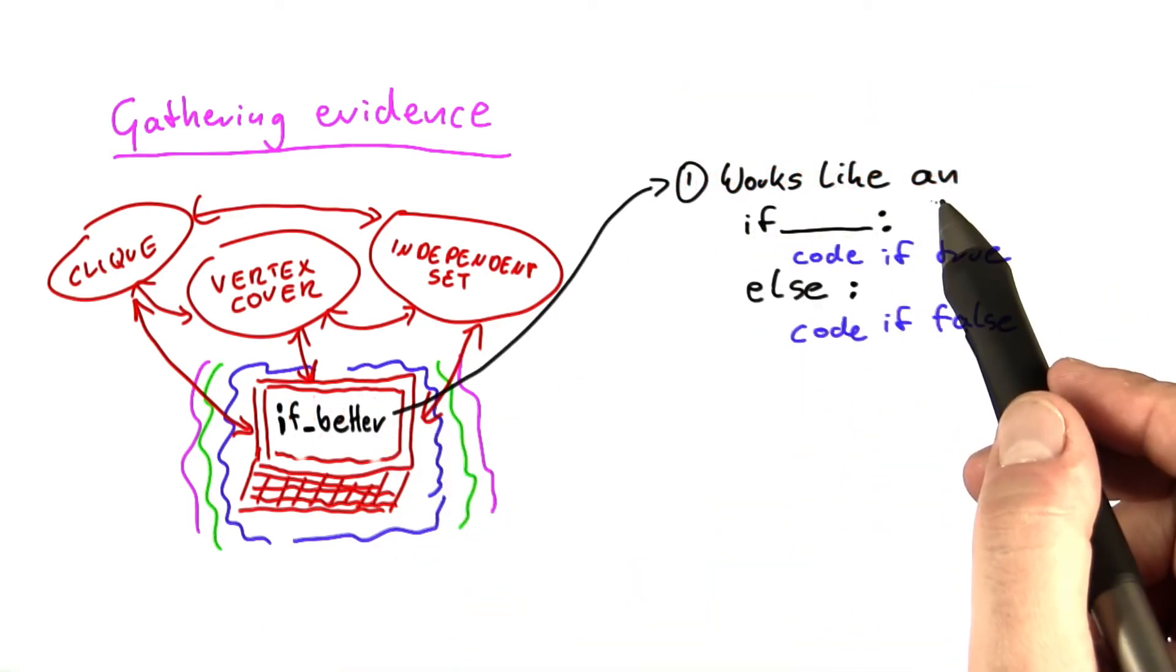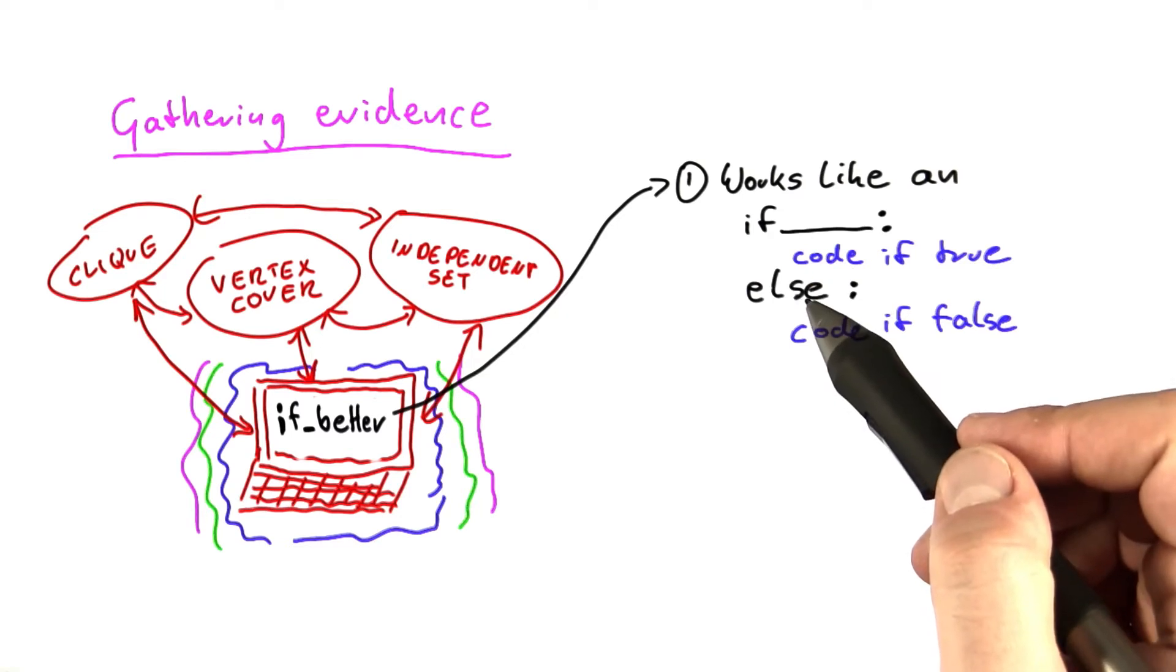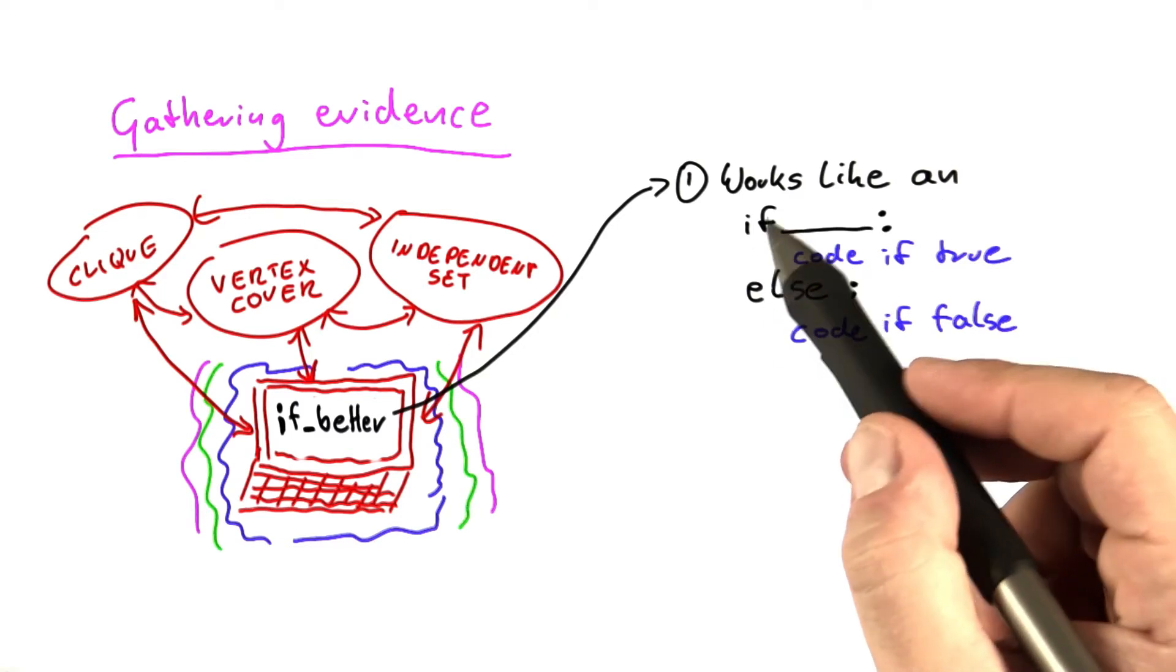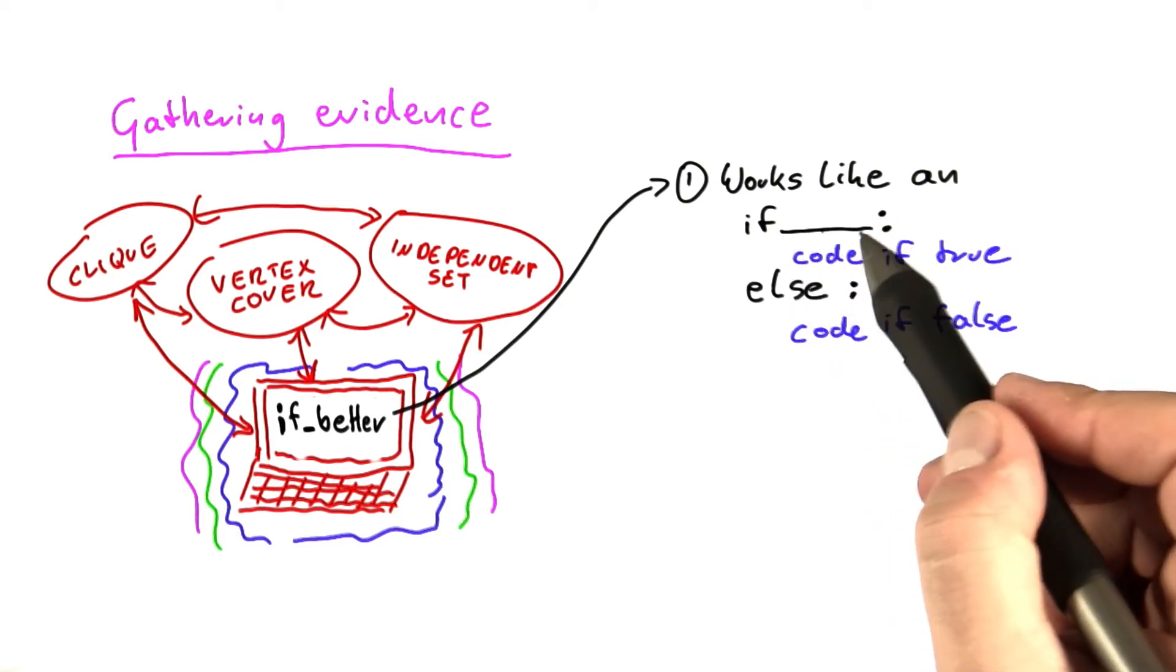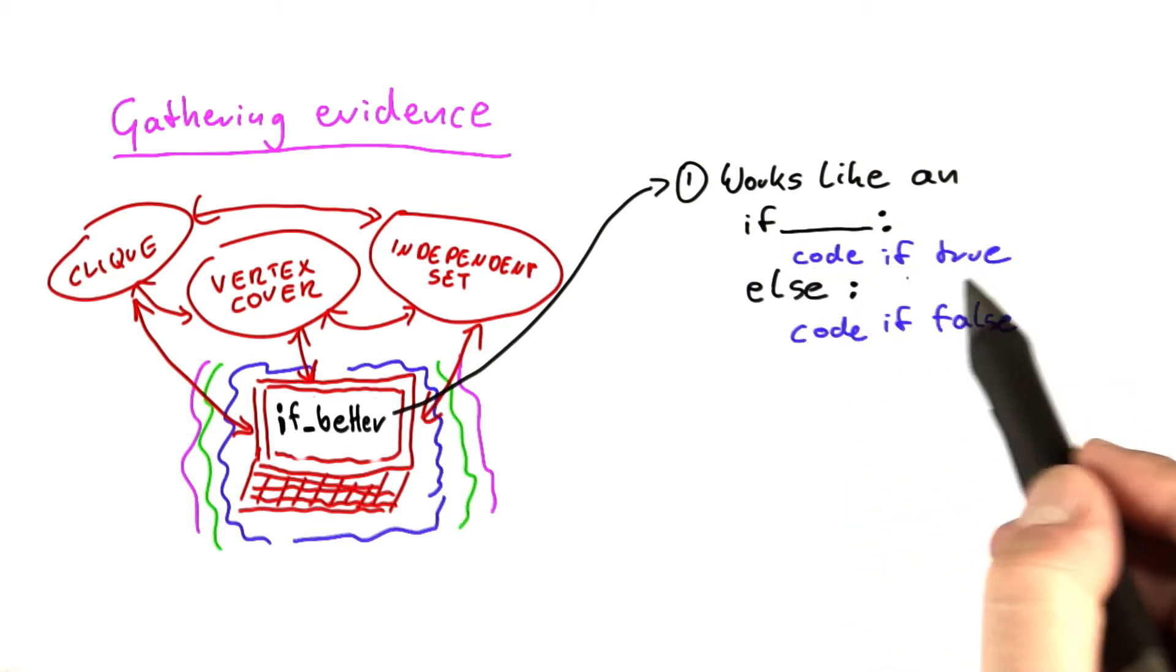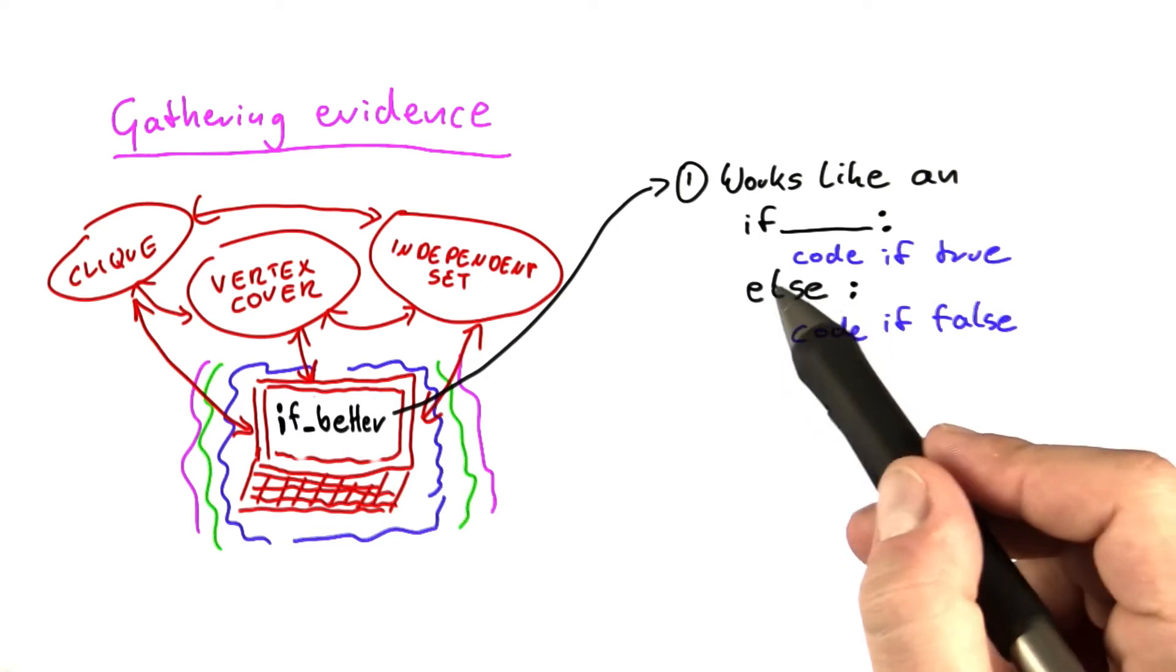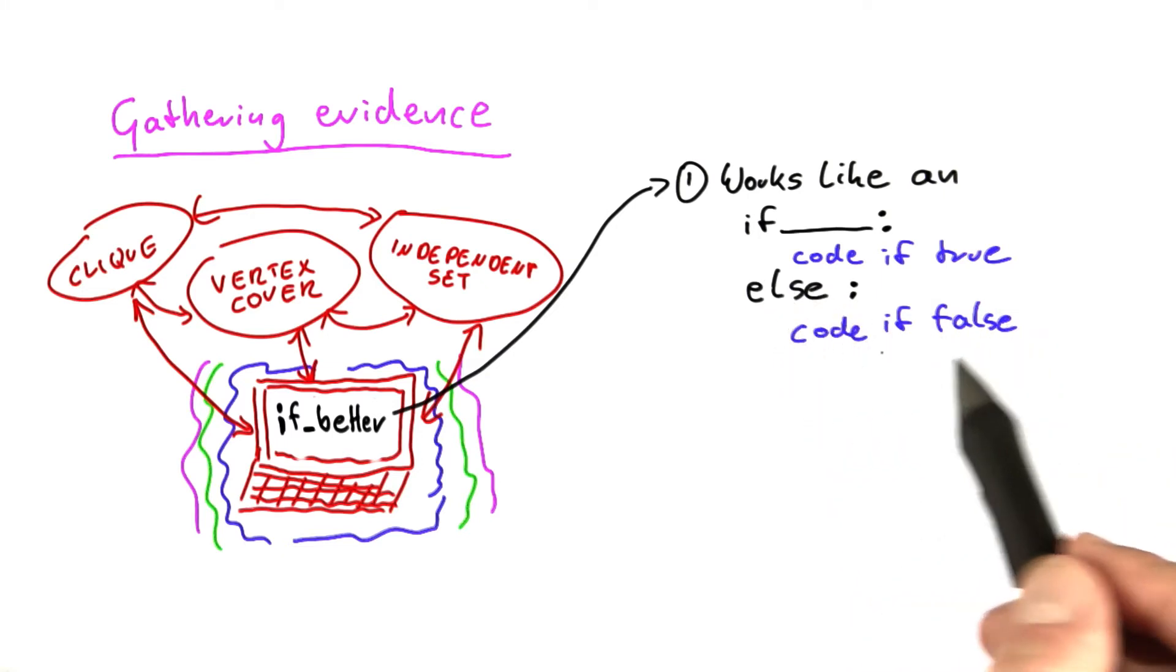The if better function basically works like a normal if-else instruction on the RAM. So the normal if-else instruction is: if this part here, which I haven't specified yet, is true, then this part of the code that you've written is executed. And otherwise, this part down here is executed.